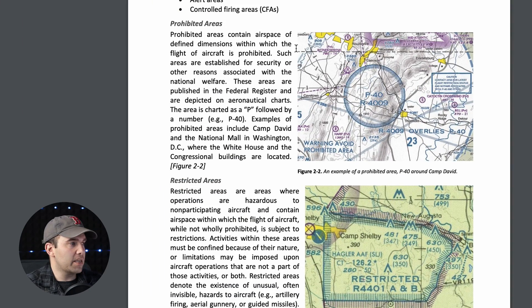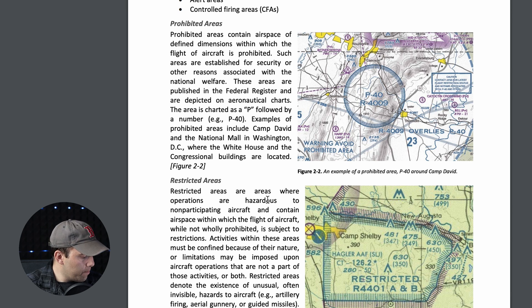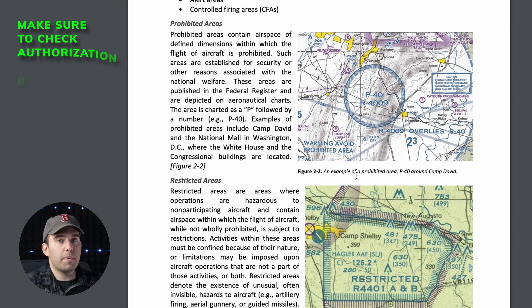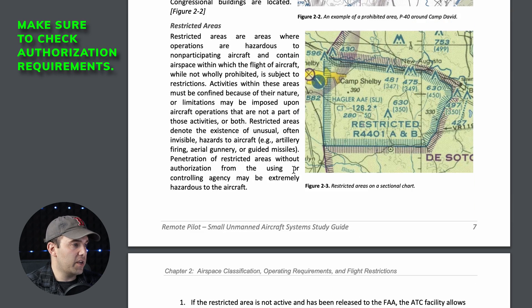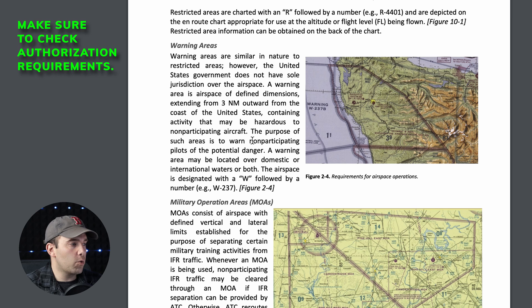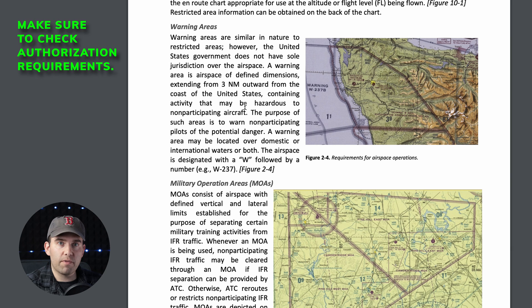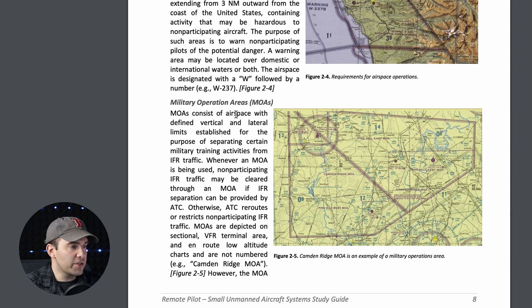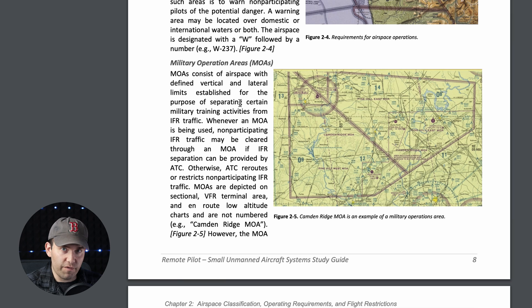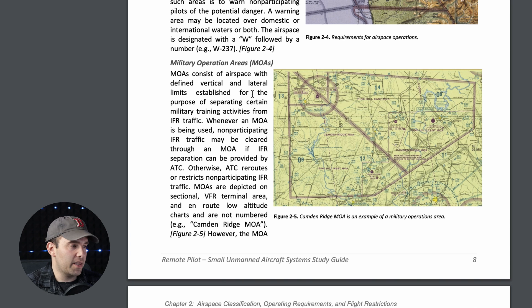There's also specialized airspace you need to know for the test. In the FAA study guide you'll find prohibited areas — marked with a blue hash — which you are not allowed to enter. Restricted airspace requires prior authorization to enter. Warning areas act like prohibited airspace but the U.S. government doesn't have full regulation over them. Military Operations Areas don't require prior authorization but you must exercise extreme caution.